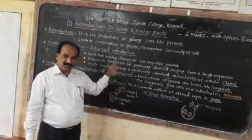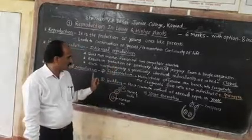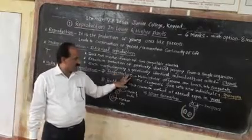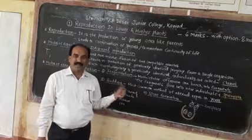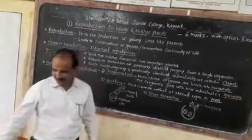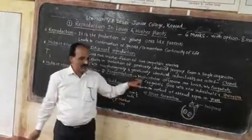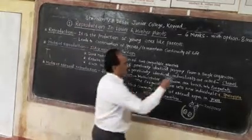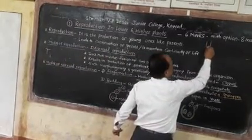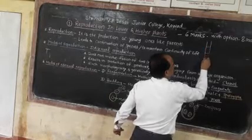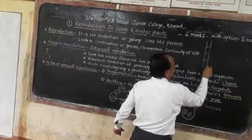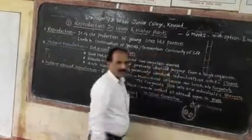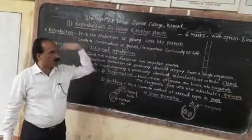There are various methods of asexual reproduction. The first is fragmentation. In this, a multicellular organism can break into fragments. For example, Spirogyra — you know Spirogyra? It is a filamentous alga. That filamentous alga can break into fragments, and each fragment grows into a new individual.